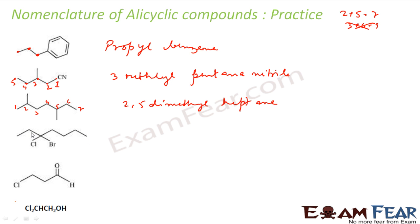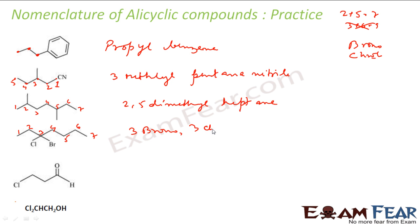Let's name this one. We have one, two, three, four, five, six, seven carbons. Numbering to give the functional groups lower numbers, we have three chloro and three bromo. Which comes first? Bromo, because 'b' comes before 'c' alphabetically. So the name is 3-bromo-3-chloroheptane.